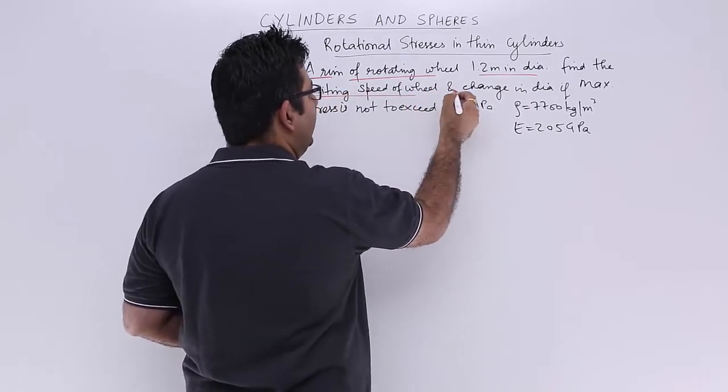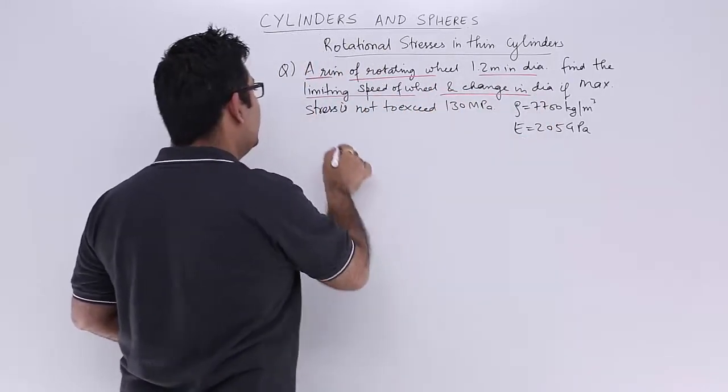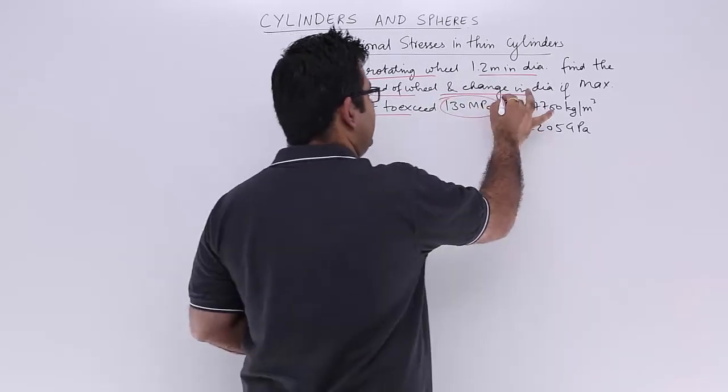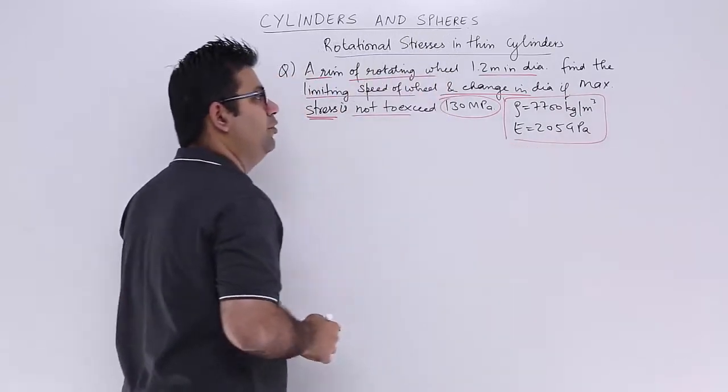Find the limiting speed of the wheel and change in diameter if the maximum stress is not to exceed 130 MPa, and these are the material values for the rim.